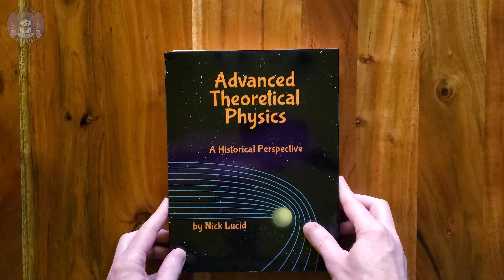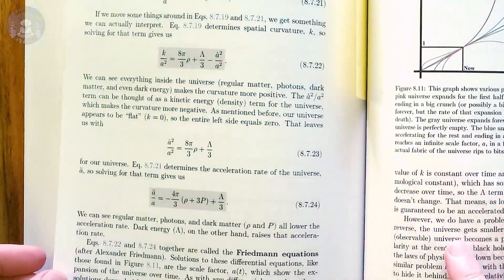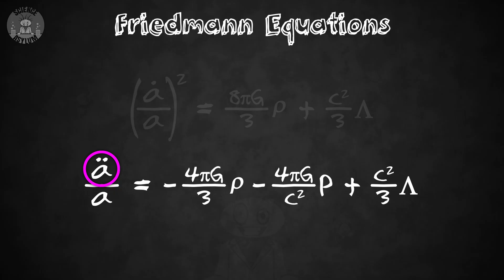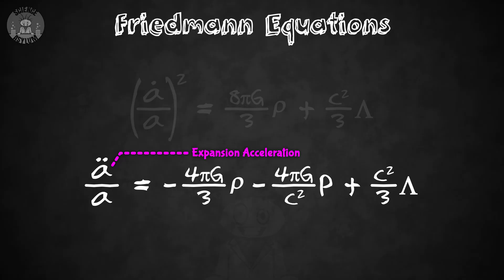If you'd like more information on the Friedman equations, my book has a whole section on cosmology and an appendix in the back with all the tensors listed. Next up, we have A double dot — the change of the change. A dot is the rate at which A changes, and A double dot is the rate at which A dot changes. Equations with four dots exist. A double dot is the expansion acceleration — how quickly spatial expansion is speeding up or slowing down.